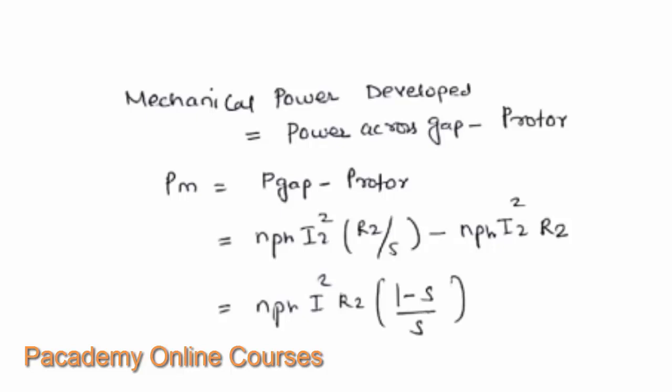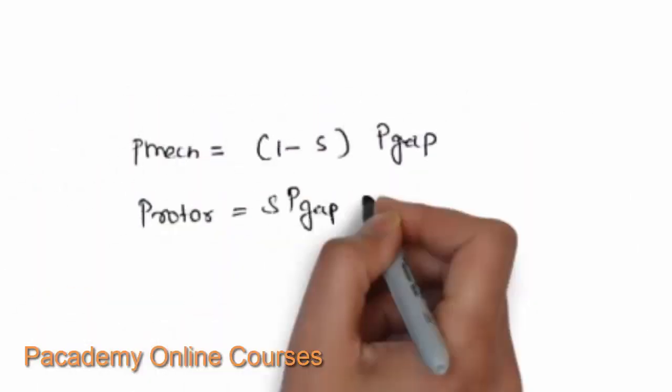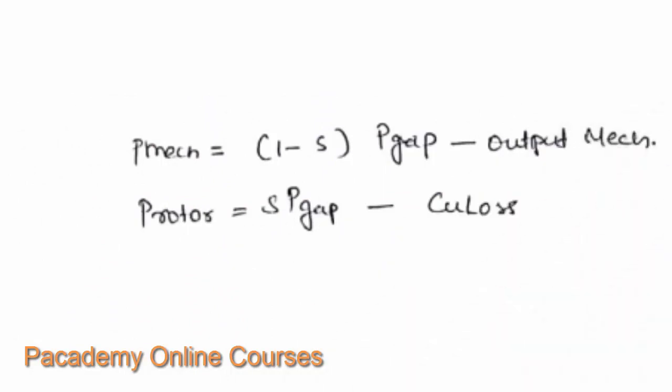The power output available at the shaft will be slightly less than this owing to friction and windage losses. The mechanical power available from the induction machine can be written as (1 − s) times the air gap power, and the rotor copper loss can be written as s times the air gap power. So the mechanical output and the copper losses can both be expressed in terms of slip.